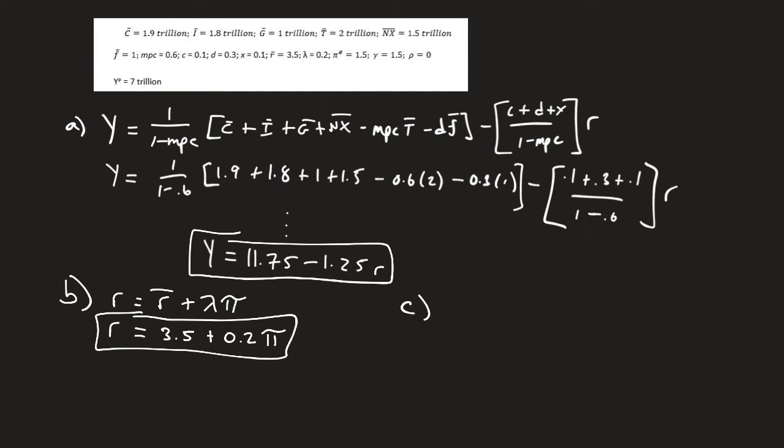The new stuff that we're talking about right now is the aggregate demand curve, which you take the IS curve, Y equals 11.75 minus 1.25. And what you're going to do is take this R and plug it in there. That's going to be times 3.5 plus 0.2 pi. And notice now we have an aggregate demand curve, which is Y as a function of pi.